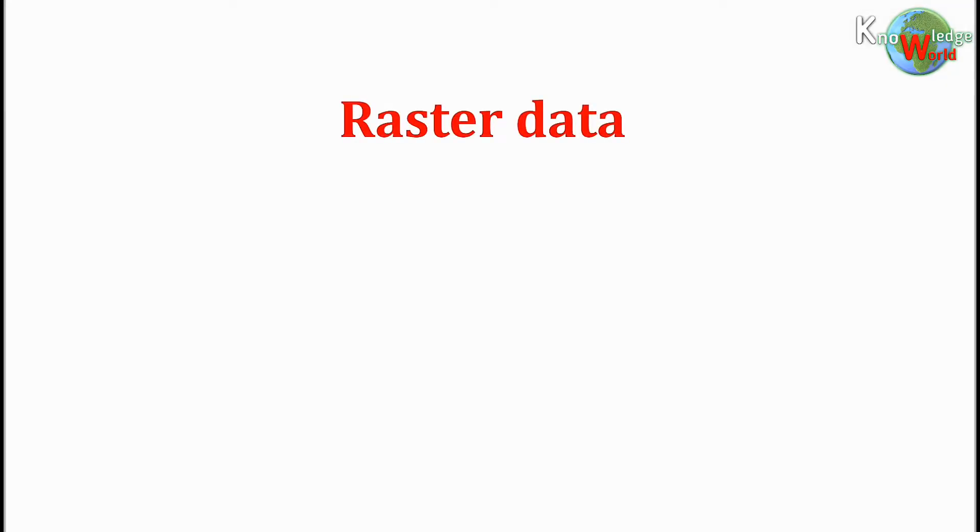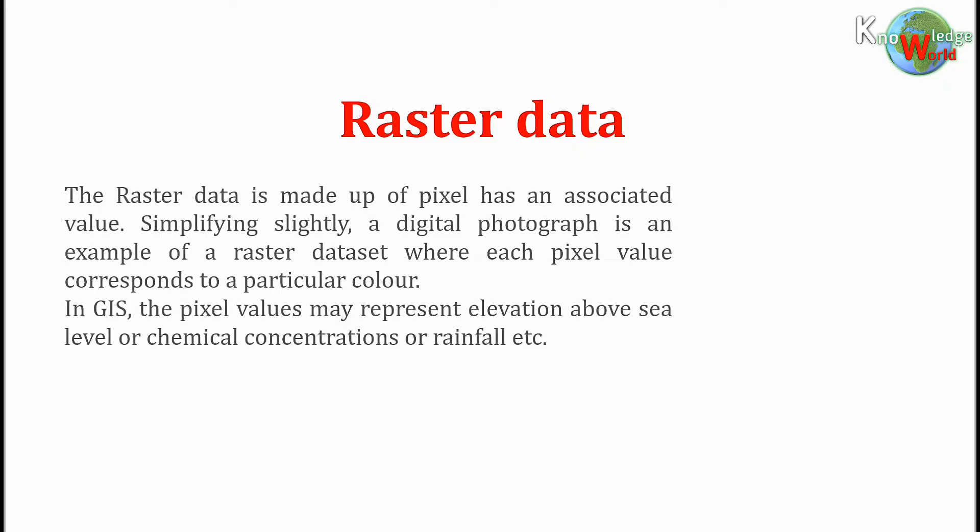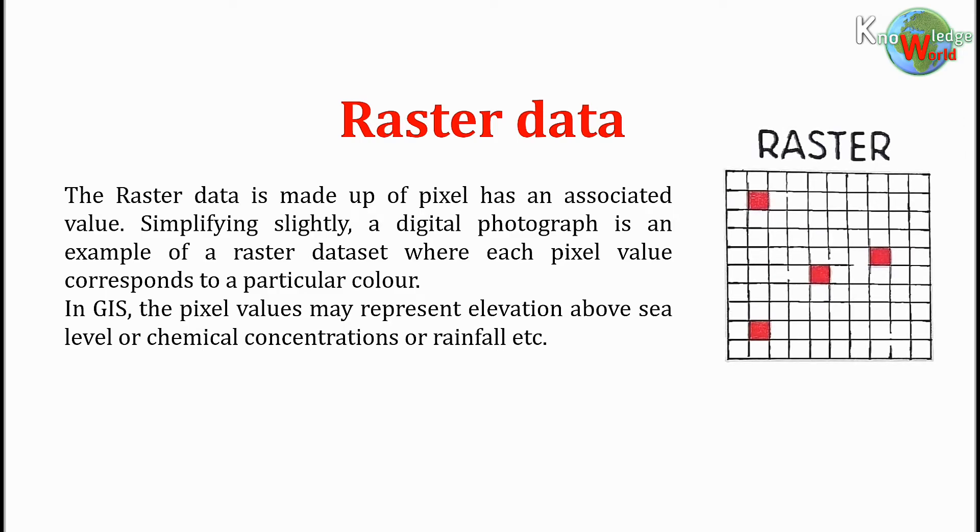Raster data is made up of pixels, each with an associated value. Simplifying slightly, a digital photograph is an example of a raster data set, where each pixel value corresponds to a particular color.